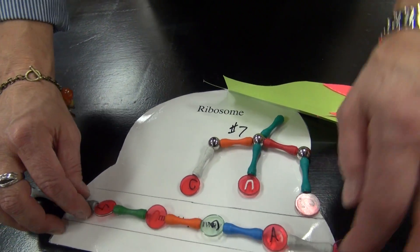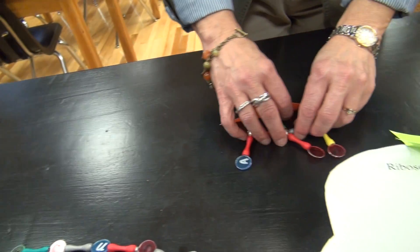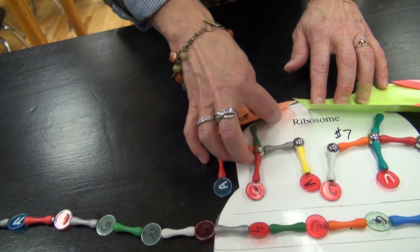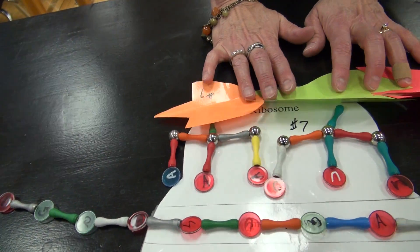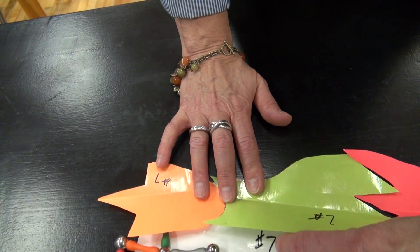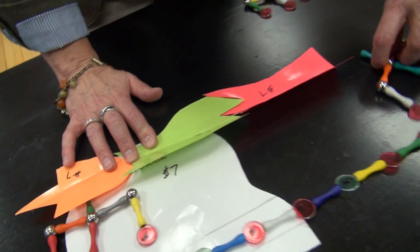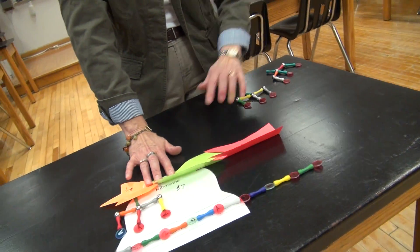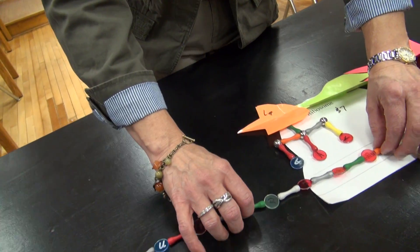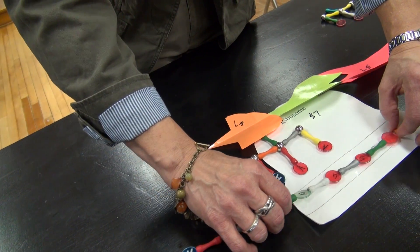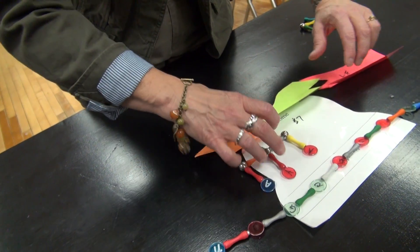It reads the next codon, calls for the next transfer RNA, which links up to this protein chain, releasing that tRNA to go for another protein. Then the ribosomal RNA continues to read the next codon.